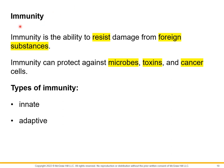Let's now talk about immunity. Immunity is the ability to resist or prevent damage from foreign substances. It can protect us against microbes such as bacteria, viruses, or fungi, as well as against toxins and cancer cells. There are two types of immunity: innate immunity and adaptive immunity.